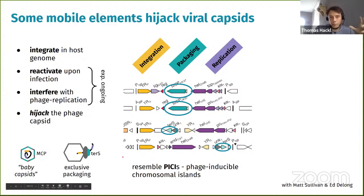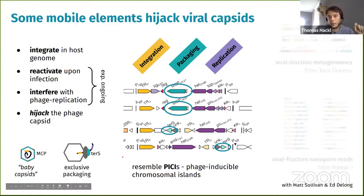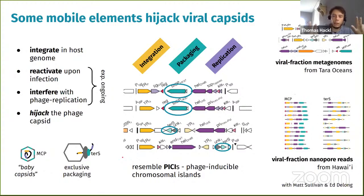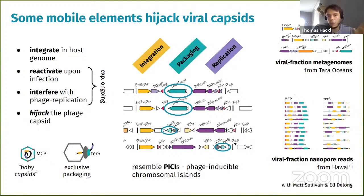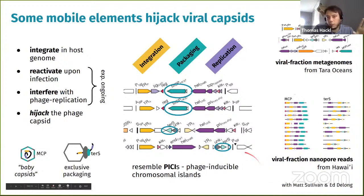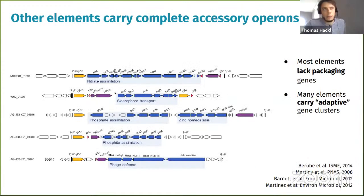We couldn't fully show this in the lab yet, but what makes me think we're on the right track is that I looked at viral fraction metagenomes — metagenomic data obtained from capsids. There we found a bunch of these elements, both in Tara metagenomes and in viral fractions sequenced with nanopore, where we got full-length elements being super abundant in viral capsids — strong evidence that these elements are being packaged in phage capsids out in the environment.